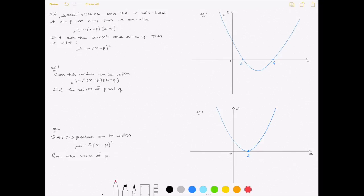We have a series of sketches here, and here I've got exercise one, which corresponds to exercise one here at the top. We're told that this parabola can be written as y equals 2 times x minus p times x minus q, and we're asked to find the values of p and q.